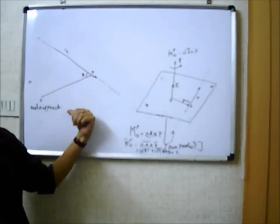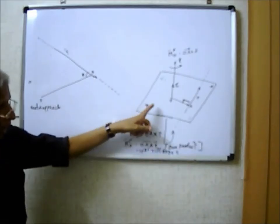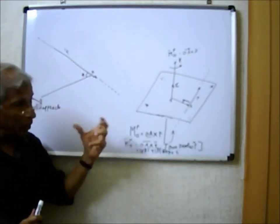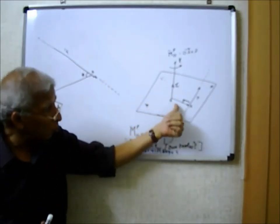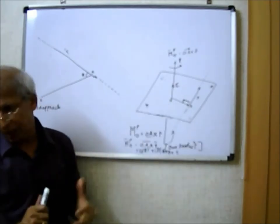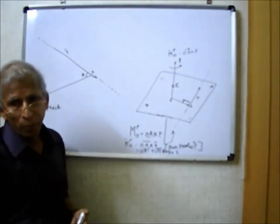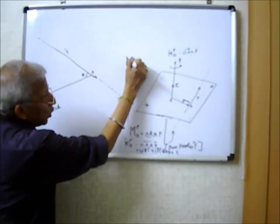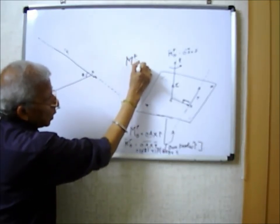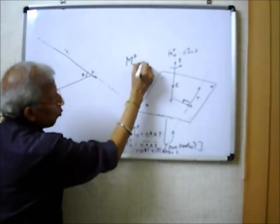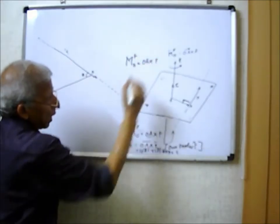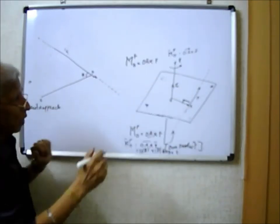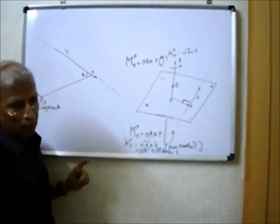There are two methods: one is the scalar method and another is the vector method. In the scalar method, OA must be perpendicular to the line of action, where OA is the moment arm and O is the moment center. In that case, the scalar formula is: moment of a force about point O equals the length of the moment arm OA times the magnitude of the force, and you mention whether it is clockwise or anticlockwise about the axis of rotation. In this case it is anticlockwise.